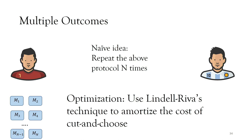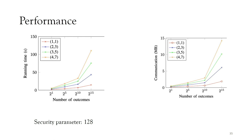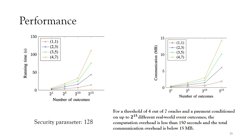Regarding performance, we evaluated the computation and communication overhead. For the prover — Ronaldo — it takes approximately 150 seconds to create the transaction for 2^15 outcomes with a threshold of 4 out of 7 oracles. We've also been in communication with the Bitcoin community, and there have been talks about replacing existing schemes called discreet log contracts with our scheme for conditional payments.